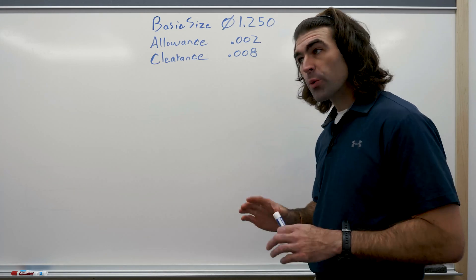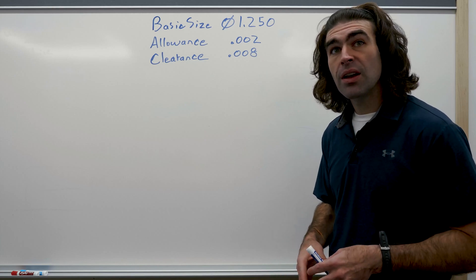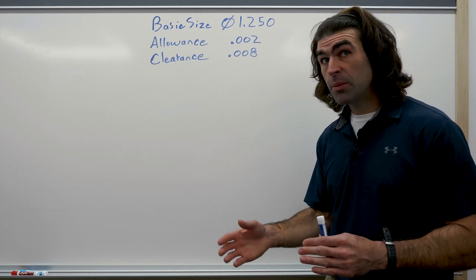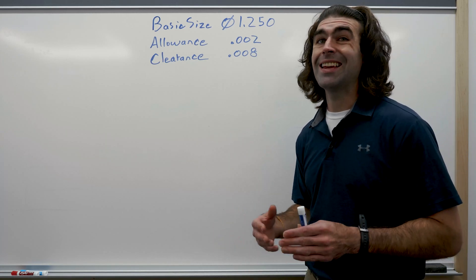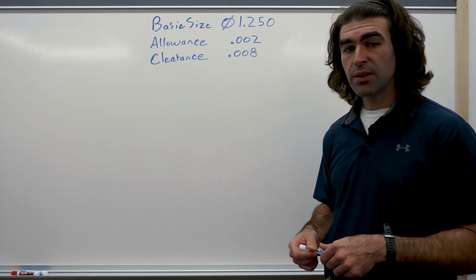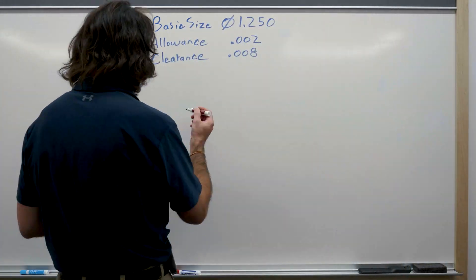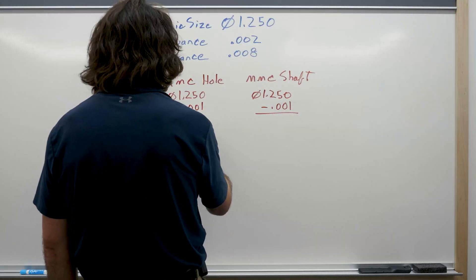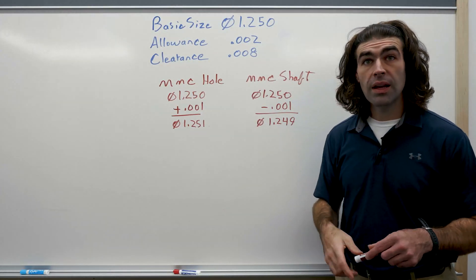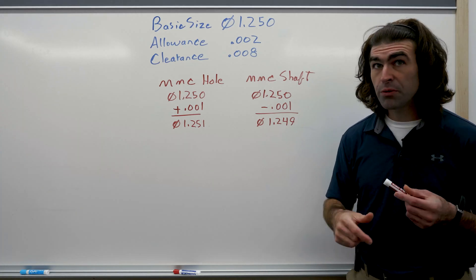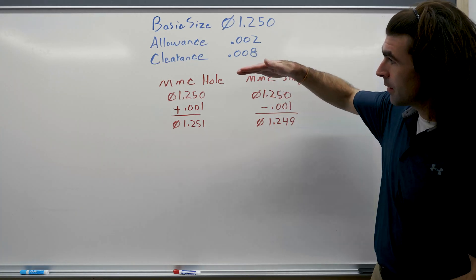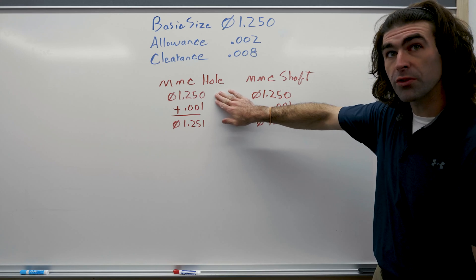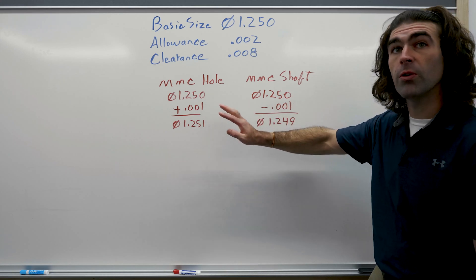So the next thing we'll do, we're going to solve for the allowance and we're going to get the MMC of the hole and the MMC of the shaft. So let me go ahead and set this up. So I got this set up and solved. We've got the MMC of the hole we'll solve first, the smallest hole it can be.